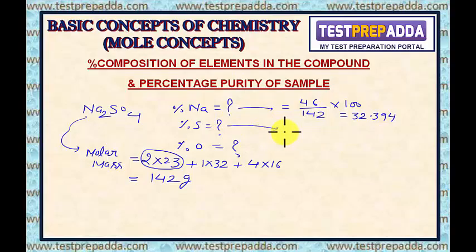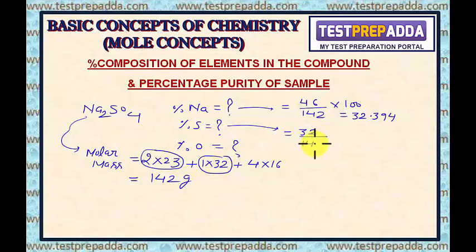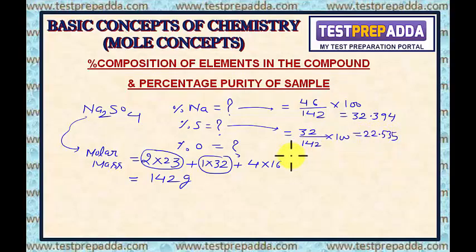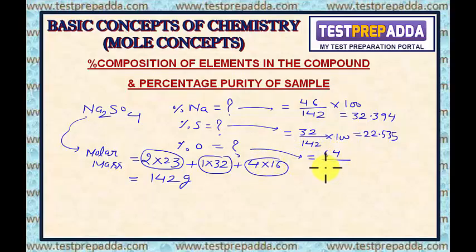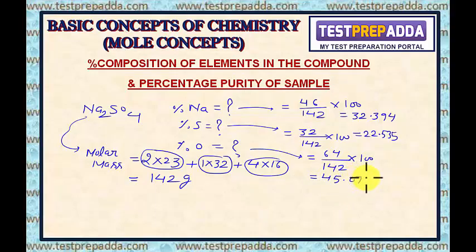In the same way, if I want to find the percentage of sulfur, the contribution of sulfur in 142 grams is 32. So it will be 32/142 × 100, and the value comes as 22.535%. Now, the percentage of oxygen: the contribution is 64 grams, so it will be 64/142 × 100, and the value comes as 45.071%.